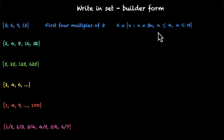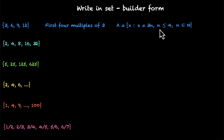So we have these three rules that we are satisfying together: x equals 3n, n can only take natural number values — so n can be 1, 2, 3, 4, and so on — but we are also restricting it, saying n has to be less than or equal to 4. So this means we are taking the first 4 values. This is how you do it.